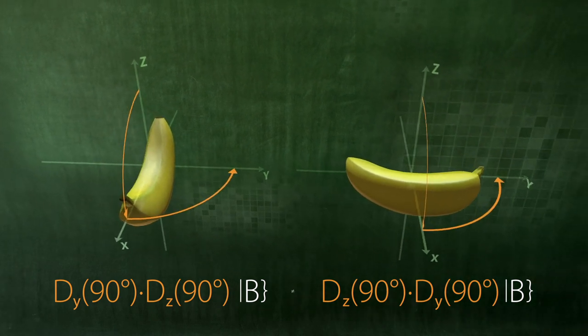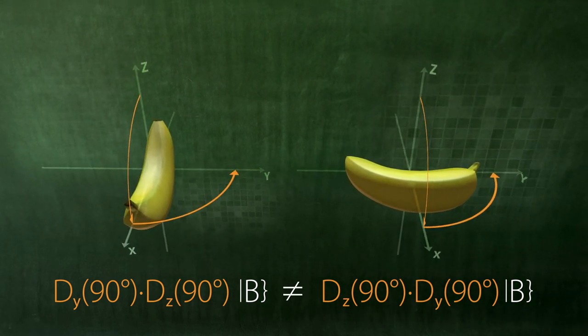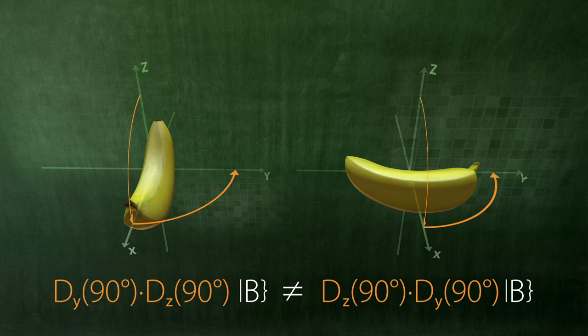Rotating operations do not commute. It means that the order in which they are applied plays a crucial role.